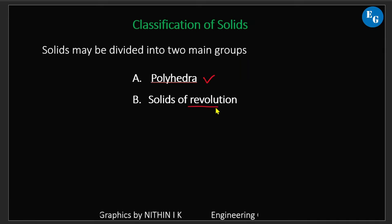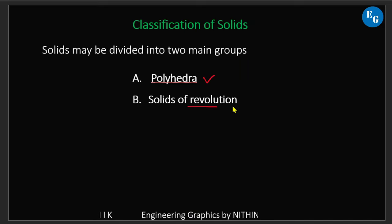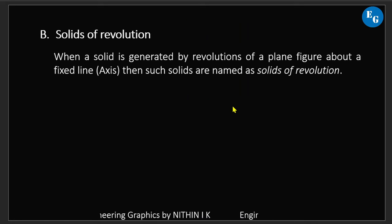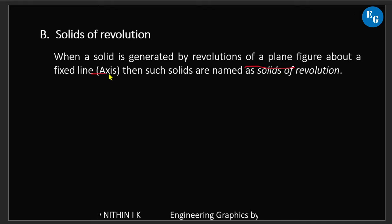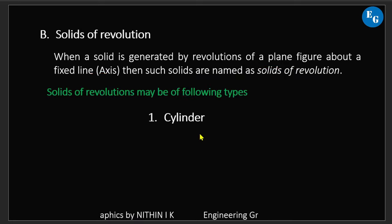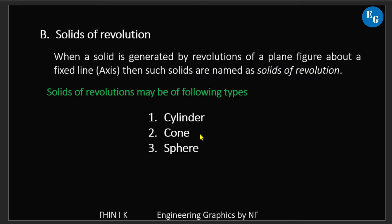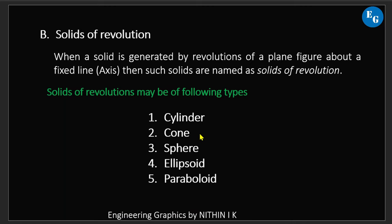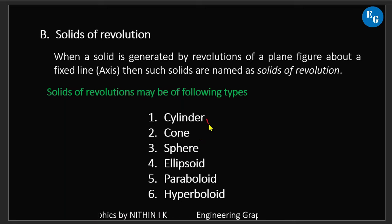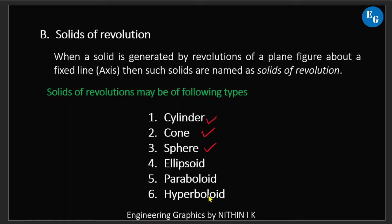The next classification is solids of revolution. When a solid is generated by the revolution of a plane figure about a fixed line (that is known as the axis), such solids are named solids of revolution. Types include: cylinder, cone, sphere, ellipsoid, paraboloid, and hyperboloid. For this syllabus, we will discuss cylinder and cone.